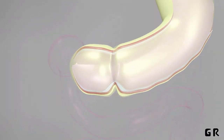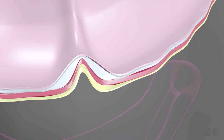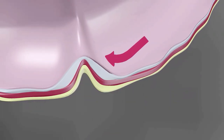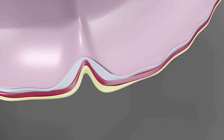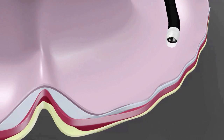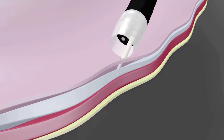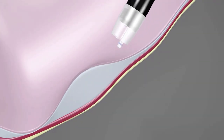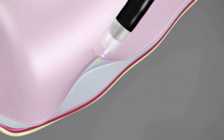In this animation, we describe a new technique called Endoscopic Tunnel Stricturotomy. The first step is to diagnose the stricture. After diagnosis, a submucosal injection is performed before the incision of the submucosal tunneling.